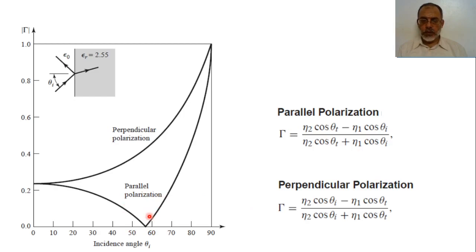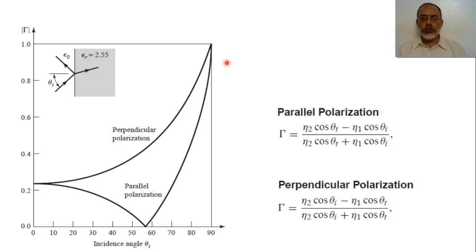In this video we have seen that parallel polarization has a reflection coefficient equal to zero at the Brewster angle, corresponding to total transmission. In the following video we are going to talk about total reflection — specifically, what condition makes the reflection coefficient equal to unity. While the reflection coefficient is unity at grazing angle (theta equals 90 degrees), we will find other conditions for total reflection as well.